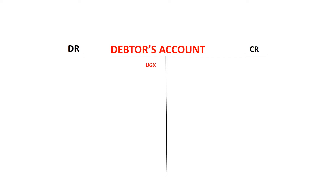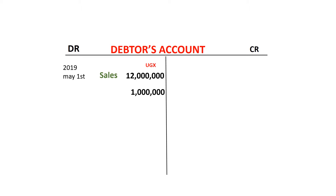Let's say this person got goods worth 12 million from the business. We are going to debit the debtor's account with 12 million, because when they come for goods you've made sales, so the other item affected is the sales account. Maybe this same person comes back and picks more goods worth 1 million shillings. We repeat the same process — debit the debtor's account with 1 million, and the other item affected is sales.